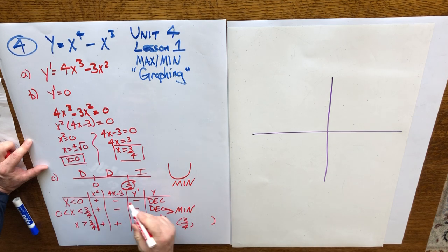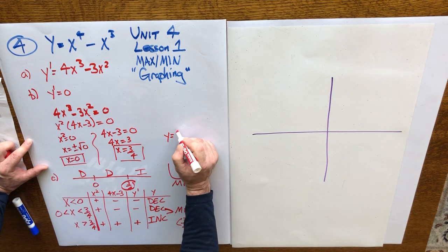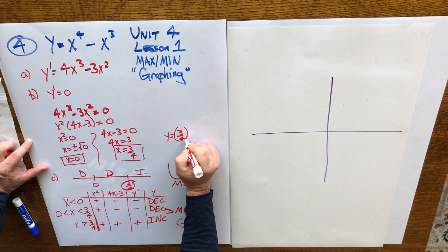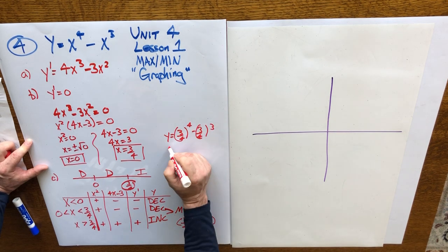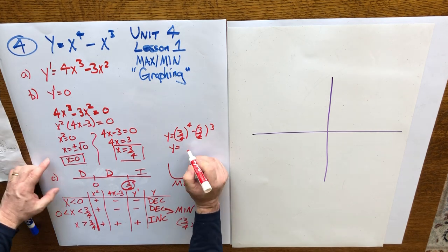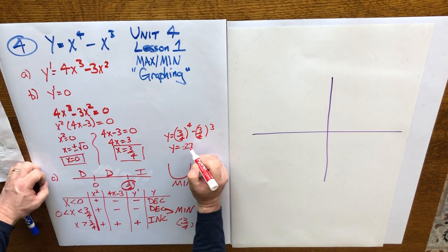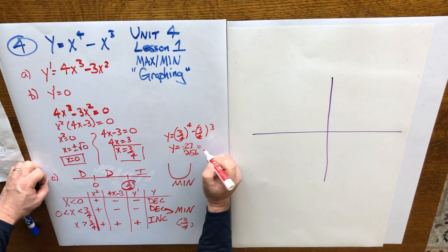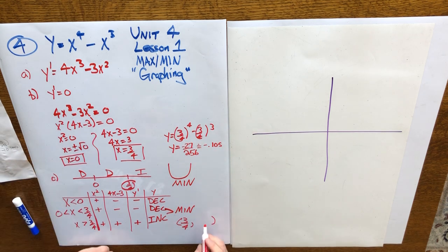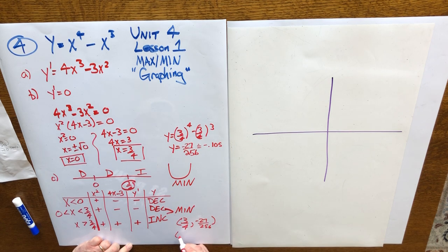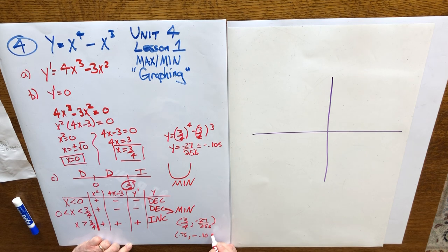You need to put 3 quarters into the original function to find out the value of y. So y will equal 3 quarters to the 4th minus 3 quarters cubed. And that gives you a value of negative 27 over 256, which is equal to negative 0.105 approximately. So negative 27 over 256, 0.75 comma negative 0.105.